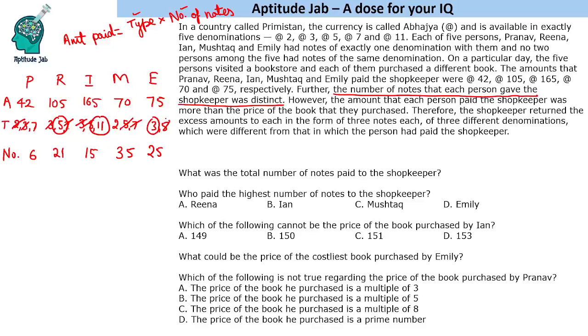Now let us see the questions. The first question asks: what was the total number of notes paid to the shopkeeper? Just add these numbers: 6 + 25 + 15 + 21 + 35 = 102.